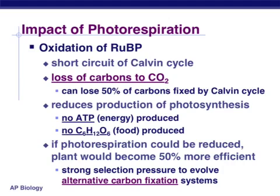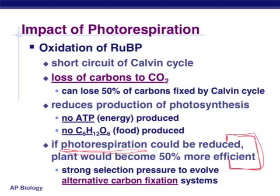It means that the first plants that underwent photorespiration would also have undergone strong selective pressure to do something different, because photorespiration results in a plant that has no energy and no food — a dead plant. So through a process of evolution, alternative ways of getting carbon evolved.